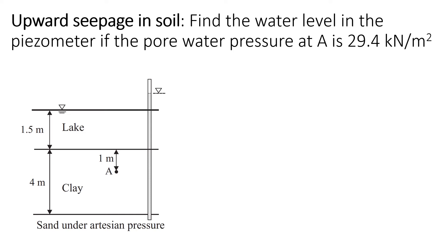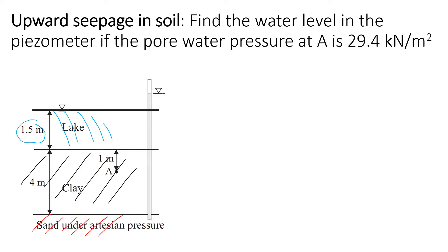This problem deals with upper seepage in a clay layer which has a thickness of 4 meters. On top of the clay layer there is a lake with 1.5 meters of water. Below the clay layer we have sand under artesian pressure — when we drill a borehole and install a piezometer, the water level will rise very high. We know that water pressure at point A equals 29.4 kN/m², and we need to find delta h, the water level in the piezometer.